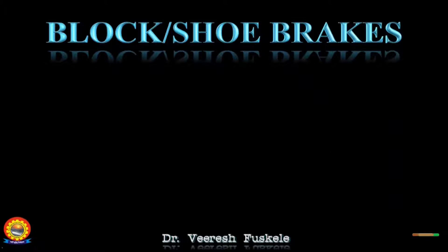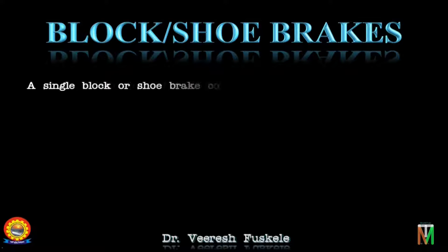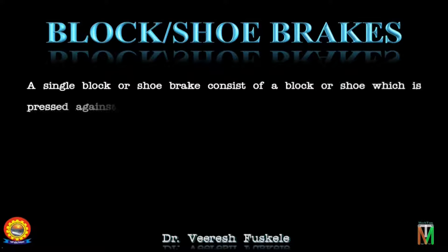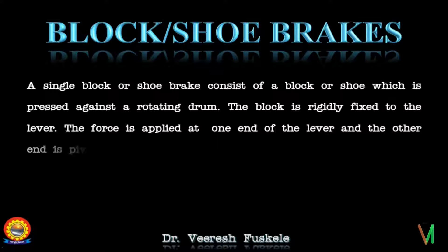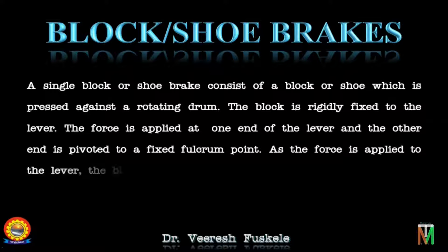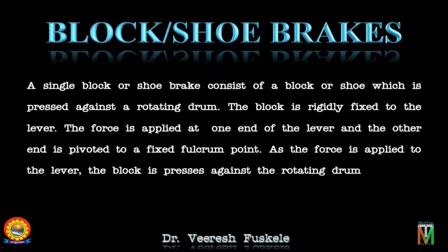What are block brakes? We just encapsulate on it. A single block brake or shoe brake consists of a block or shoe which is pressed against a rotating drum. The block is rigidly fixed to the lever; force is applied at one end of the lever and the other end is pivoted to a fixed fulcrum. As the force is applied to the lever, the block is pressed against the rotating drum and the brake is applied.